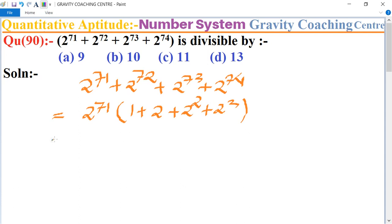This equals 2^71 multiplied by (1 + 2 + 4 + 8), and the sum equals